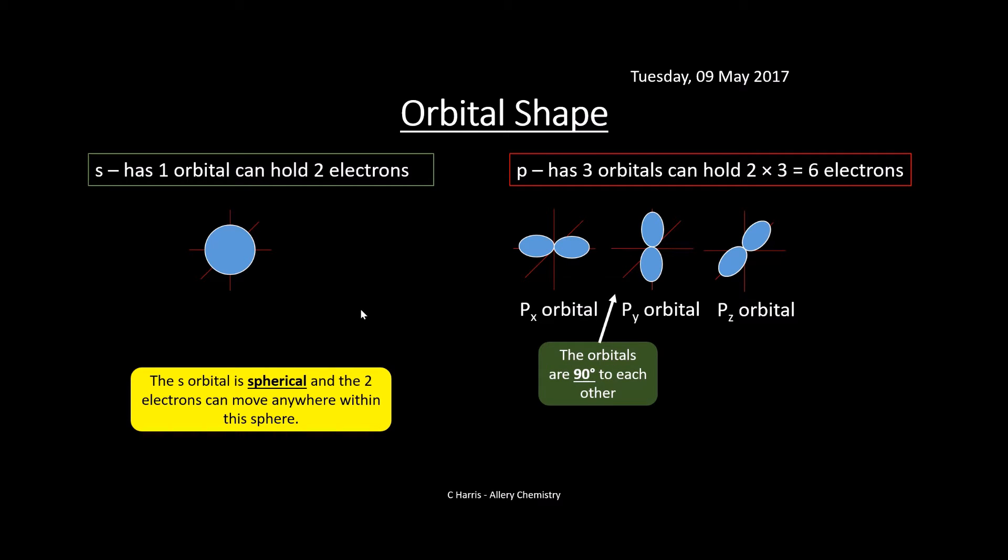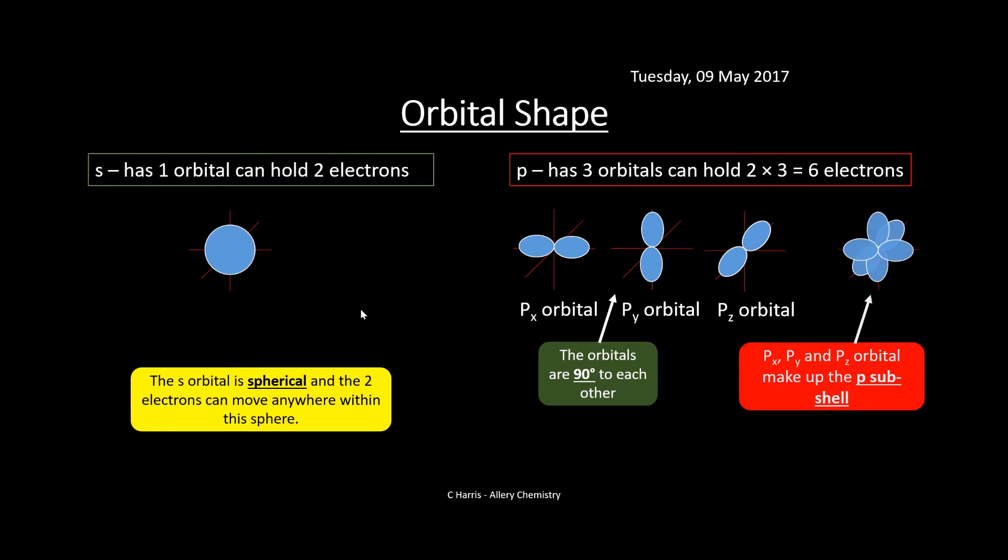When we cluster them all together, which is what happens in reality, you get this shape. We've got the PX, PY, and PZ orbitals making up the P subshell, and the electrons move around within these orbitals. The S and P make up a shell, so a shell is made up of one S and one P, especially in the second principal quantum number.